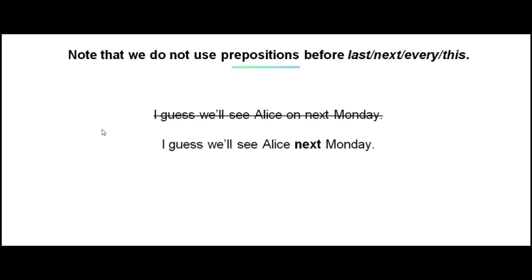Have a look at the sentences below. 'I guess we'll see Alice on next Monday' — this sentence would be incorrect, because the preposition 'on' is not supposed to be used before 'next.' The correct form would be: I guess we'll see Alice next Monday.